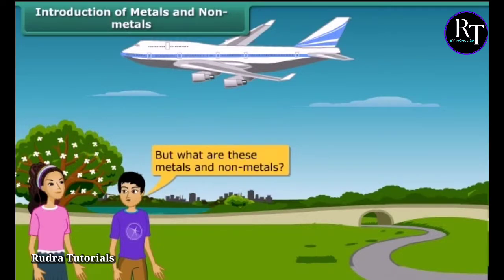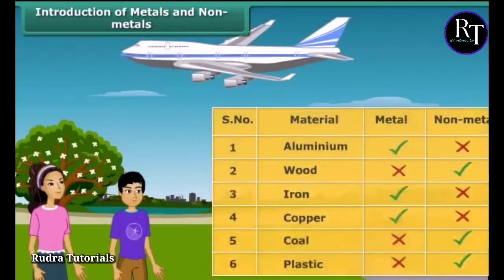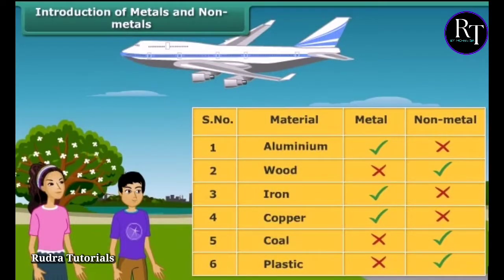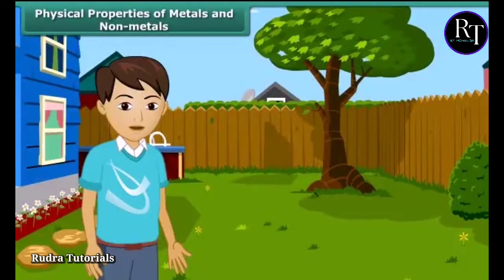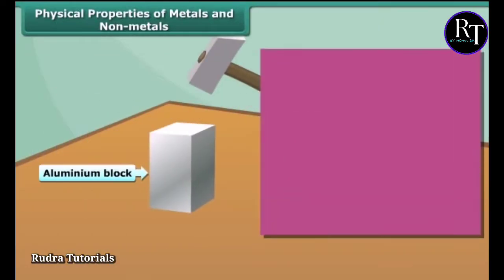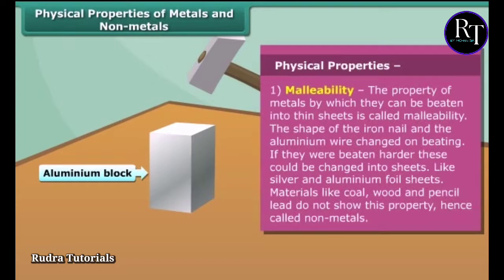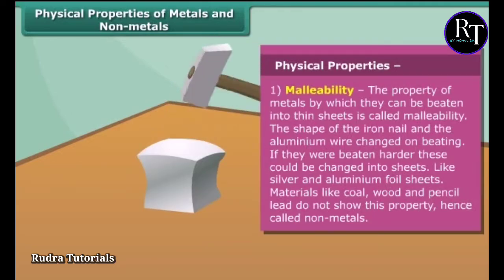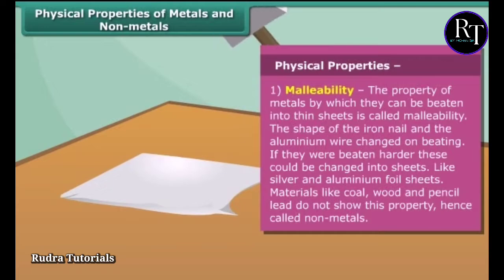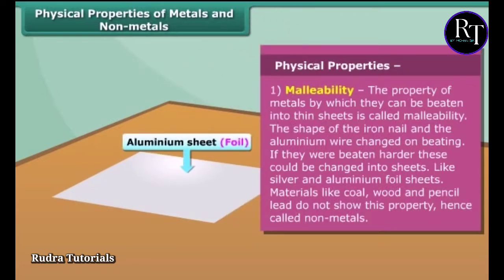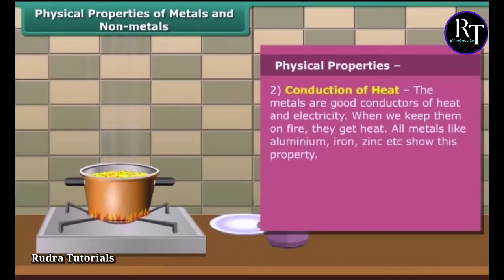But what are these metals and non-metals? Friends, we use many things in our daily lives — these are made up of metals and non-metals. Now let us know about their properties. The first physical property of metal is malleability — by this property, metals can be beaten into thin sheets. Non-metals don't show this property.